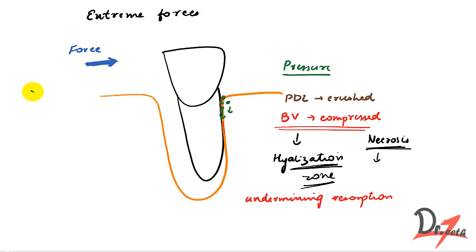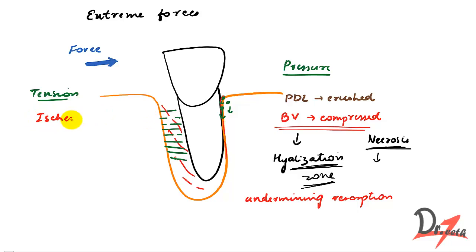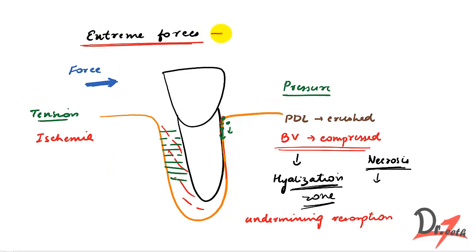On the tension side under extreme force, the PDL gets over-stretched and blood vessels get torn, causing ischemia. Hence there is net osteoclastic activity, and the tooth becomes loosened in its socket — which is not what we want. We can also have pain and hyperemia of the gingiva because of extreme forces.